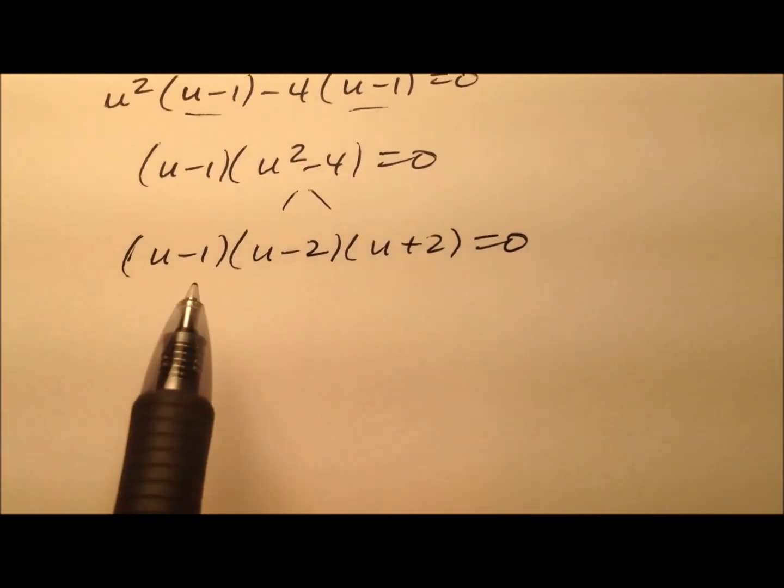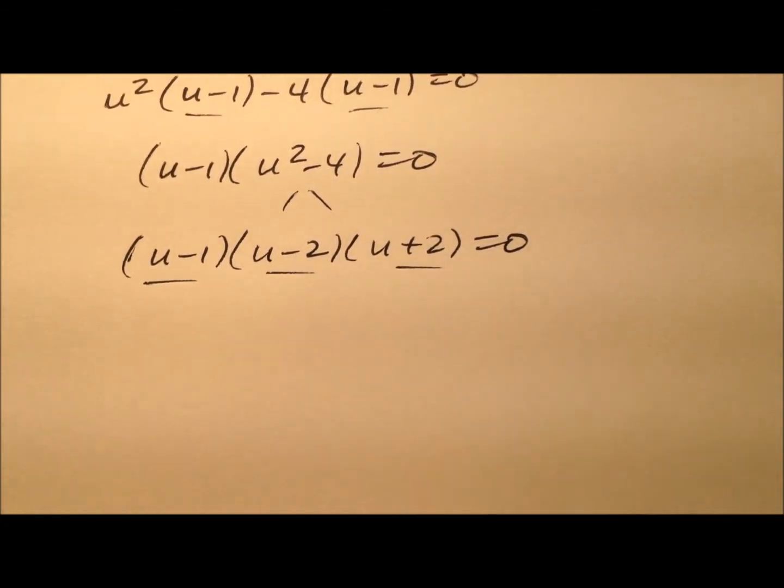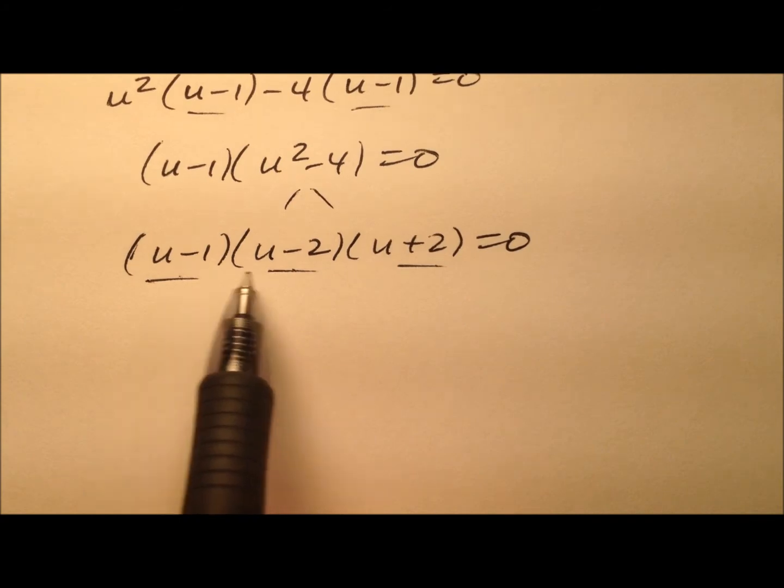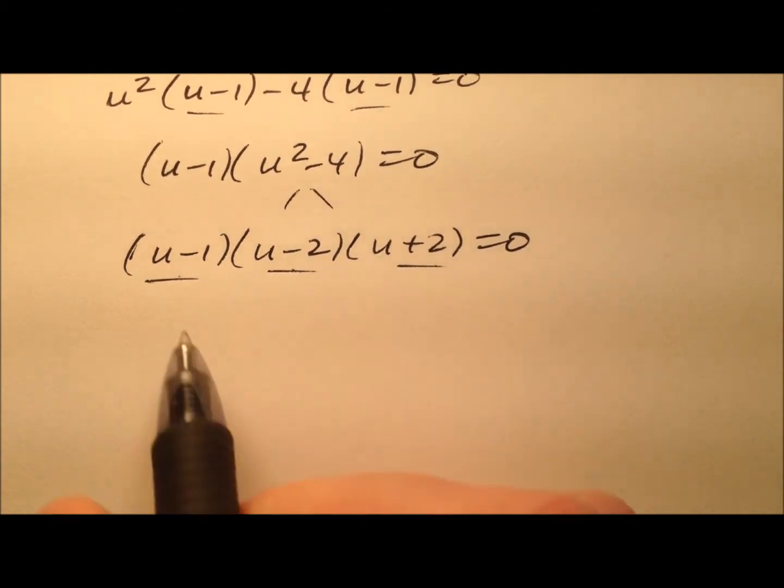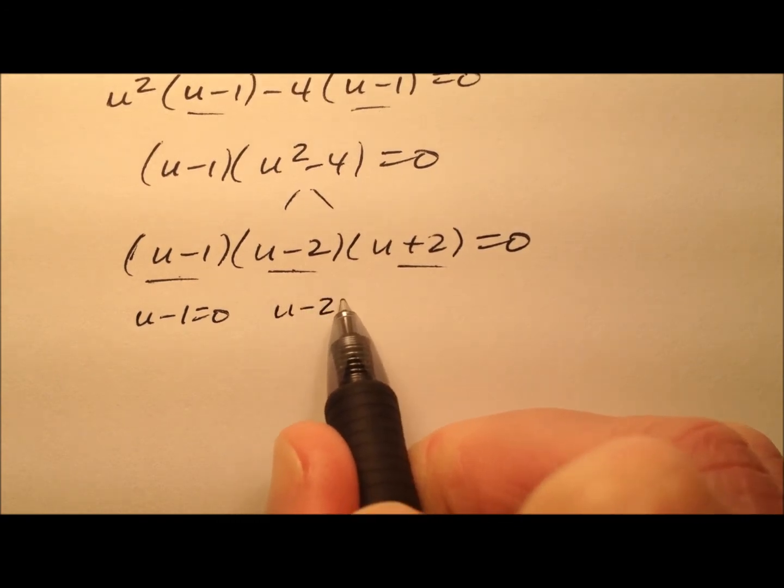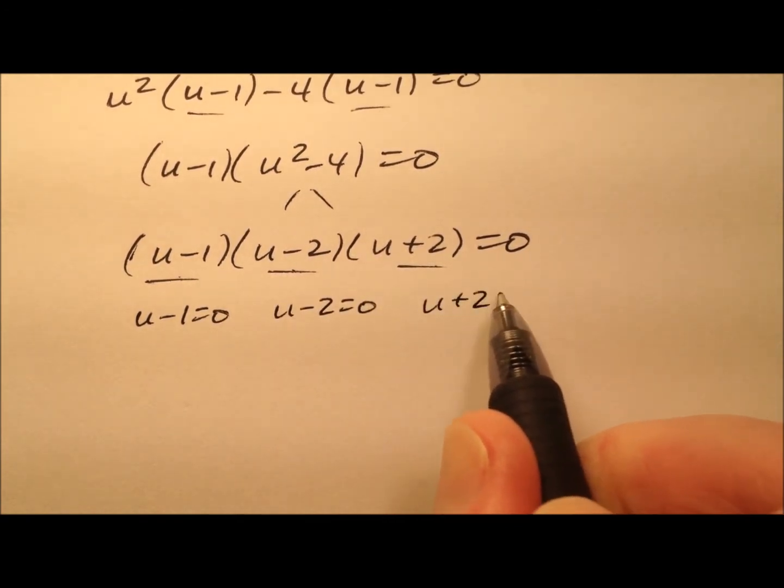All right, so I have three factors here, and I'm multiplying them all together, and it equals 0. So I can use my zero property of multiplication, which just says one of these kind of has to be 0. So let's account for all of them, and we'll just set each of these factors equal to 0 and solve them all independently.